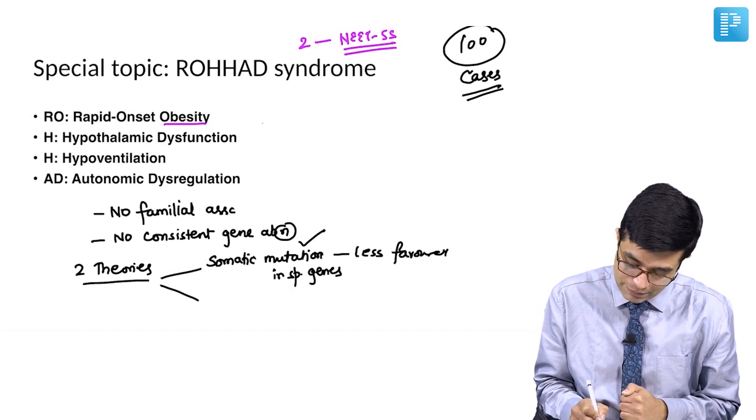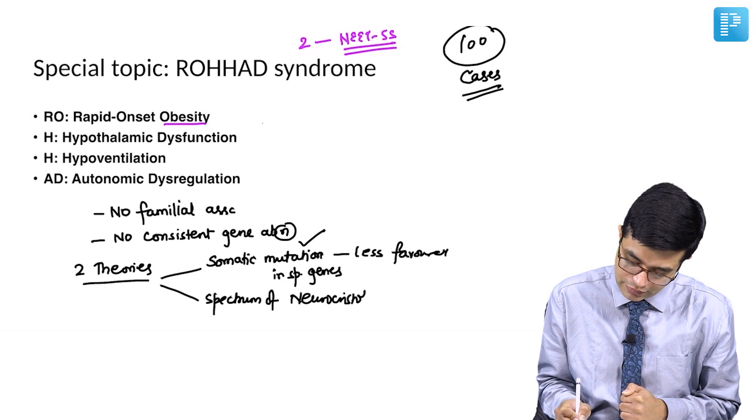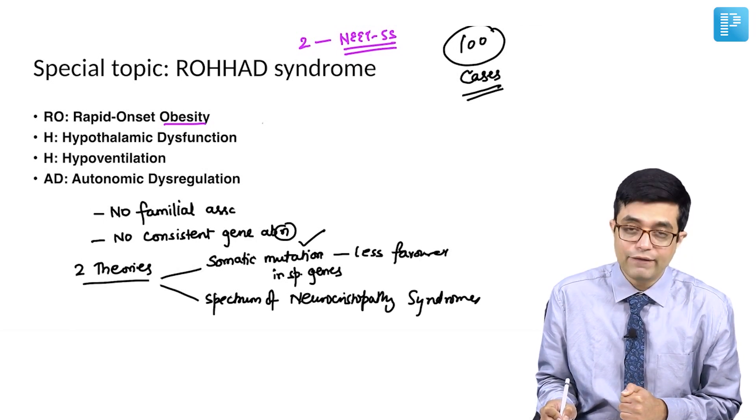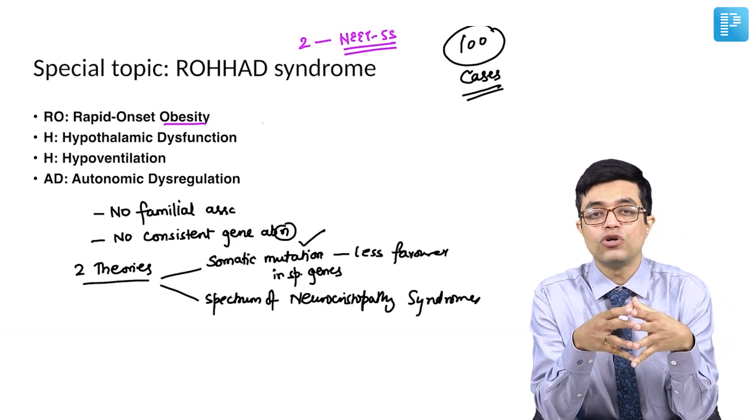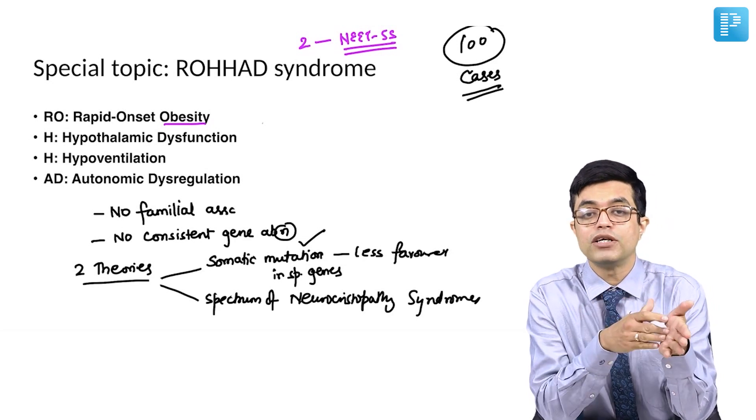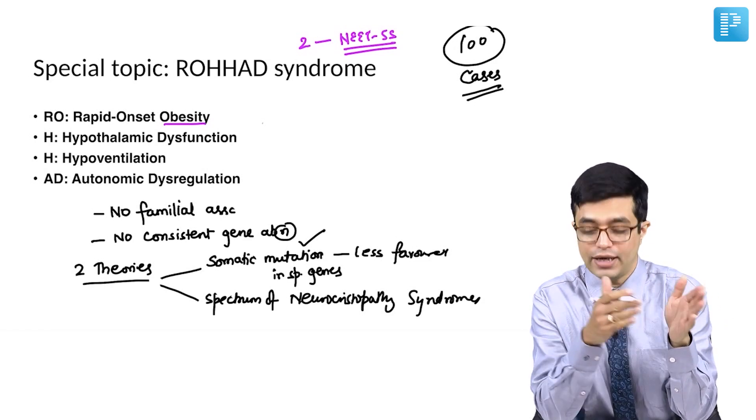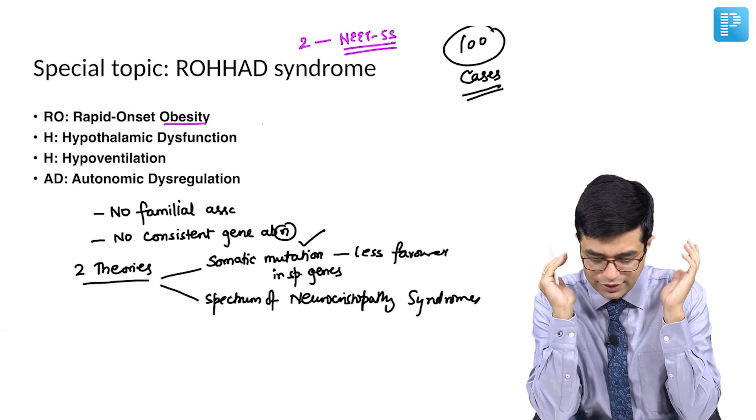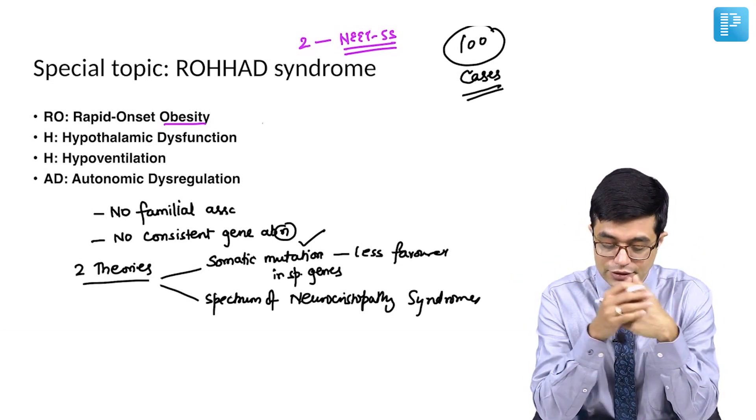Second is it is part of a spectrum of neurocristopathy syndromes. What are neurocristopathy syndromes? They are the ones in which neural crest derivatives are abnormal. Rohard syndrome has been found to be associated with neuroblastoma, ganglioneuromas, and even Hirschsprung's disease. They all may comprise different parts of the same spectrum. It is an area of active research, and that is why we will not go beyond the reasons for these.